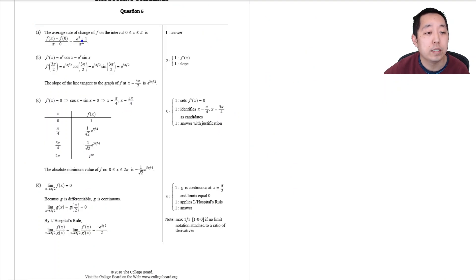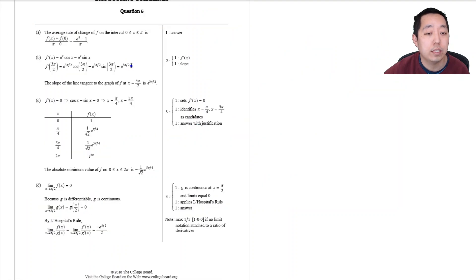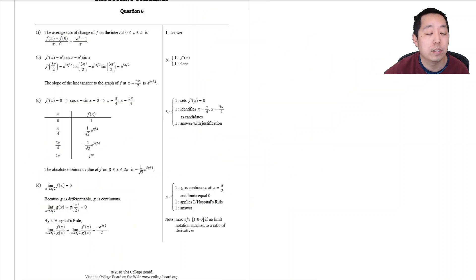Let's take a look at number 5. Negative e to the pi minus 1 over pi, that's what I got. e to the 3 pi over 2, that's what I got there. These are the critical numbers, they fill out the table, and it happens at 5 pi over 4. This is the same. Negative 1 over root 2 is the same as negative root 2 over 2, e to the 5 pi over 4. And then negative e to the pi over 2 over 2.